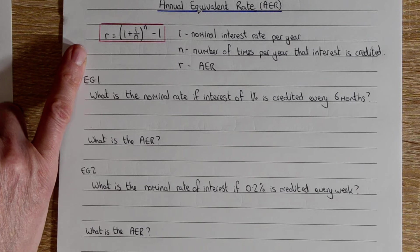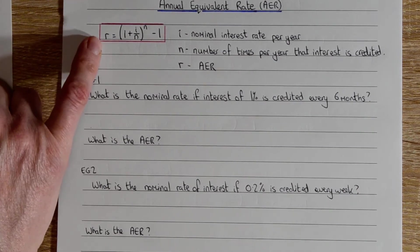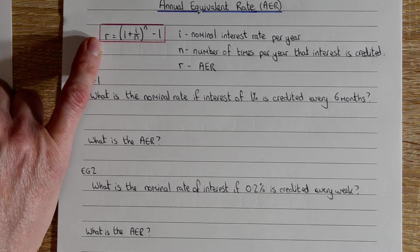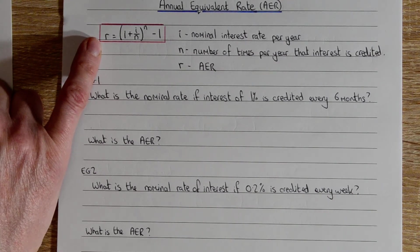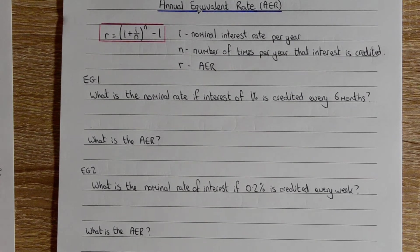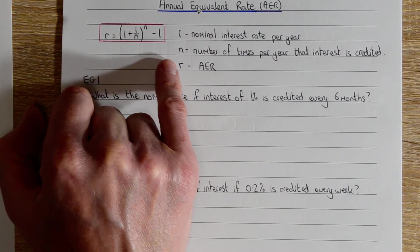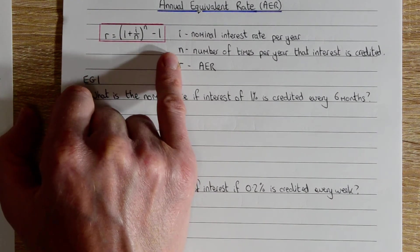In the red box, we've got the formula to find annual equivalent rate. R is the AER, and this is a formula that will be on your formula sheet, so you don't need to memorize it. We've got these other two letters in the formula: I and N.